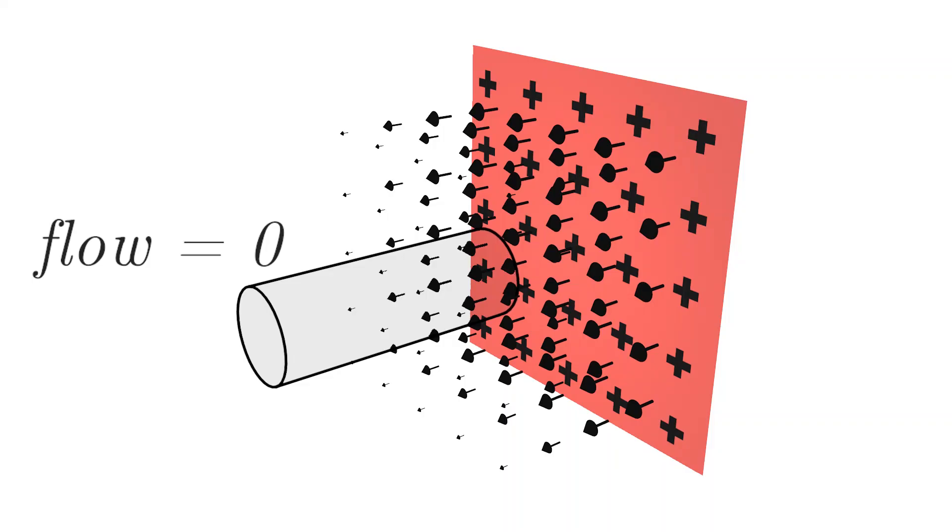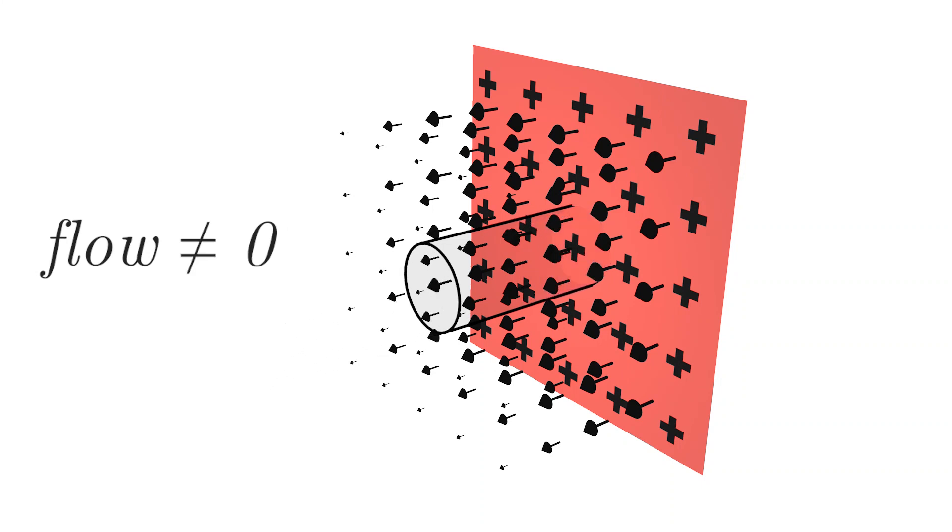And so we can place this Gaussian surface so it encapsulates some of this charge plane. And now we can calculate the electric field. Classic.